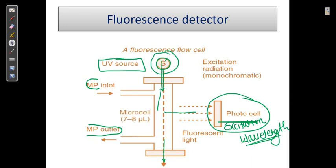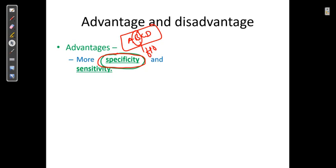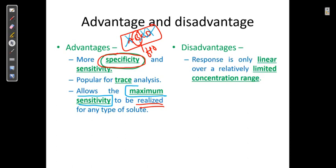The fluorescence detector is more specific. Its advantage is that it detects only specific compounds — for example, from a mixture of A, B, C, and D, only C (the fluorescent compound) will be detected. It is popular for trace analysis and allows maximum sensitivity to be realized for any type of solute.